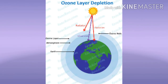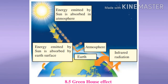Depletion in ozone layer. The ozone layer is present below the stratosphere at a height of 48 km from earth's surface. It protects the living world of the earth from ultraviolet rays radiating from the sun. However, nowadays the ozone layer is getting depleted, meaning decreasing, due to the following reasons.